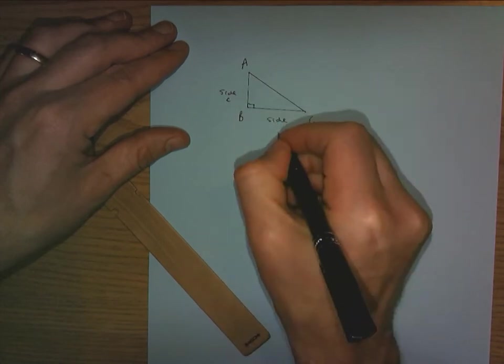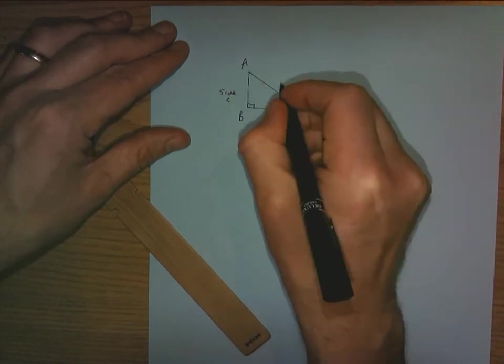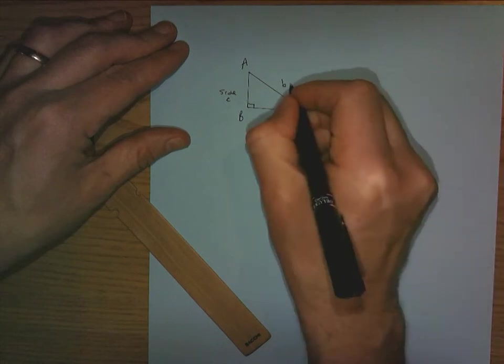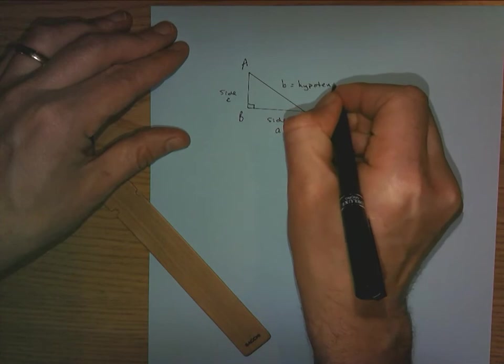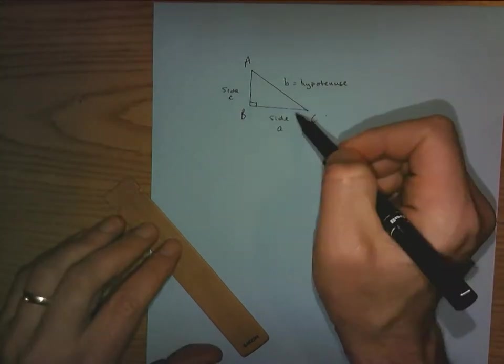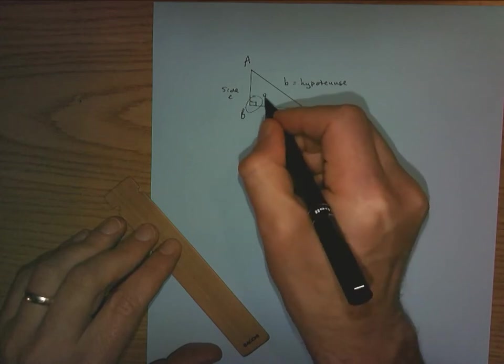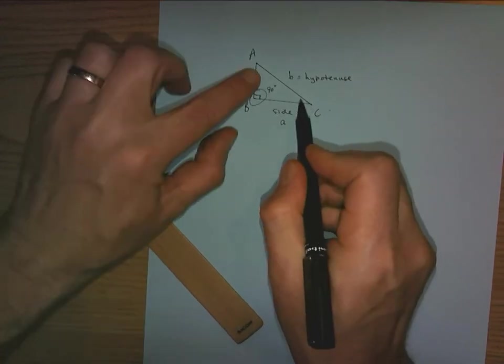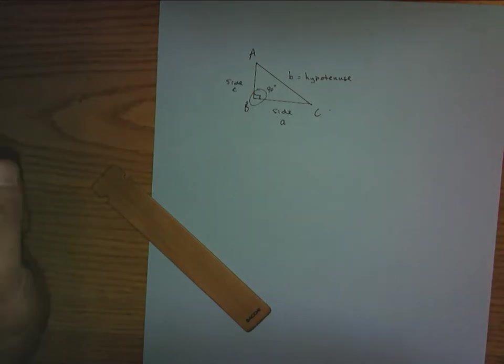This side length will be little a because it's opposite the angle a. This side length will be called little b, and it is also the hypotenuse, which means it's the longest side of the triangle. This side is longer than this side and this side, and it's opposite the largest degree, this one being 90 degrees. These two angles add up to 90, but neither one of them can be 90 degrees or higher.